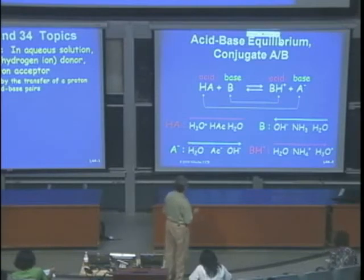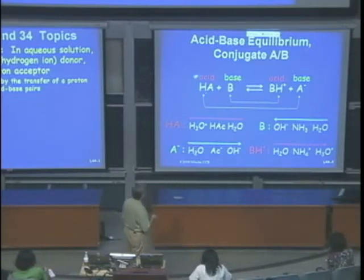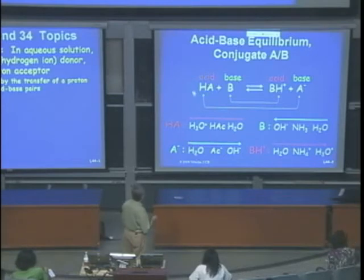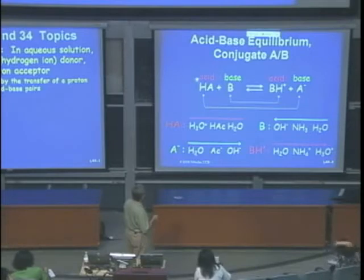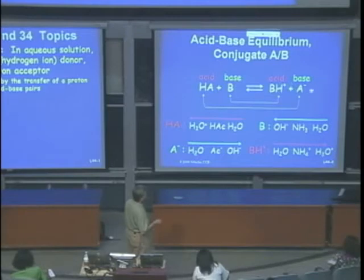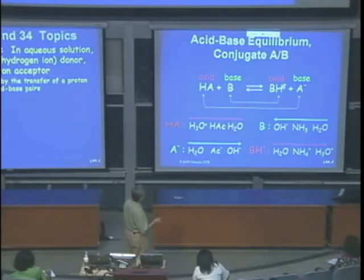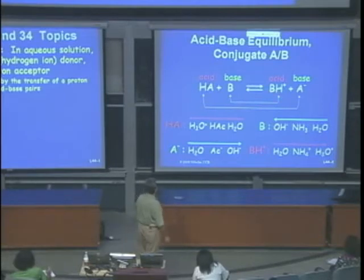Generally, in an acid-base equilibrium, you have an acid HA with an acidic proton and a base — for example, water. Water can act as both an acid and a base. The base takes that proton off the acid, so the acid becomes its conjugate base, and the base becomes its conjugate acid by gaining the proton.